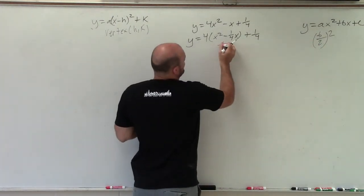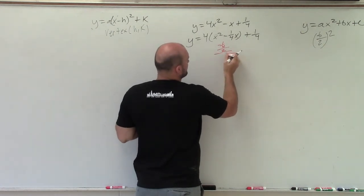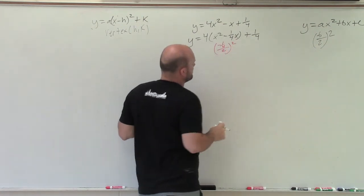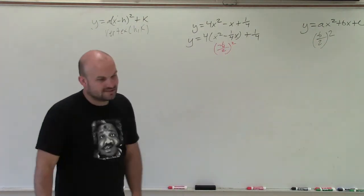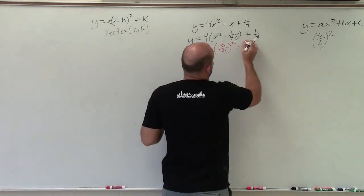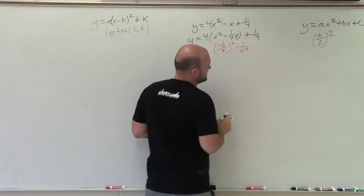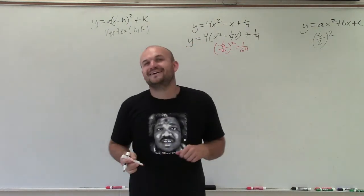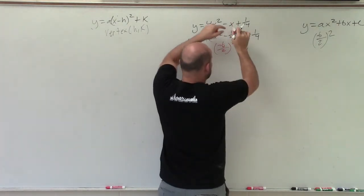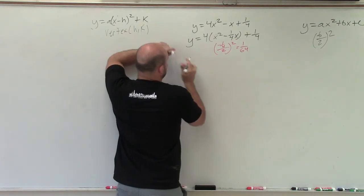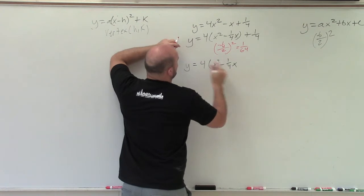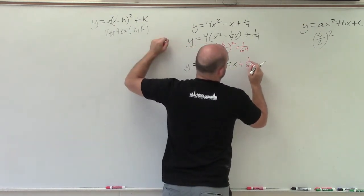So I'll take negative 1 fourth divided by 2 and square it. Well negative 1 fourth divided by 2 is going to be negative 1 eighth. Negative 1 eighth squared is going to equal a positive 1 over 64. Now I need to make sure I add that 1 over 64 inside of my parentheses. So I'll have y equals 4 times x squared minus 1 fourth x plus 1 over 64.